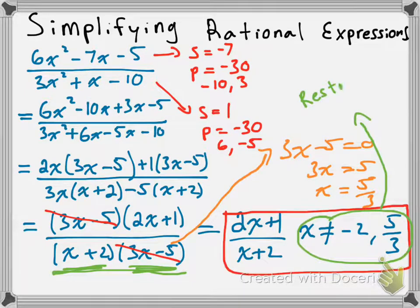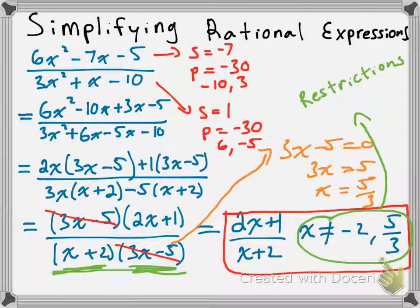And that is our final answer. The two values we're not allowing x to be — negative 2 and 5 thirds — are called the restrictions. Certain questions are going to ask you to simplify and then state the restrictions, and that's what we mean. Stating the restrictions means going back to your factored form and deciding what values in your denominator make it equal to 0. That's simplifying rational expressions — you're going to need to know how to do this for tomorrow's lesson. I hope that clears things up. Take care, guys.